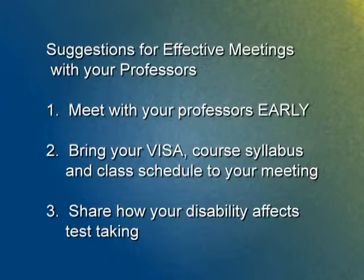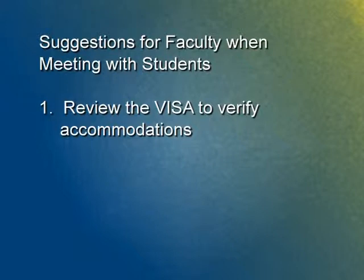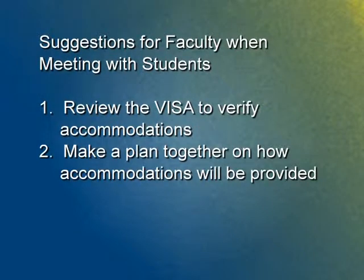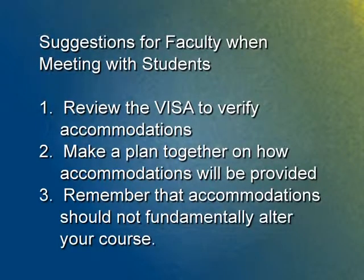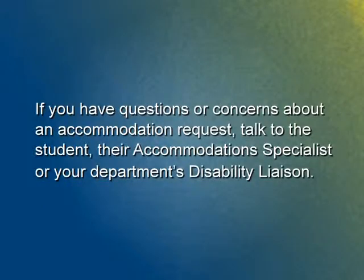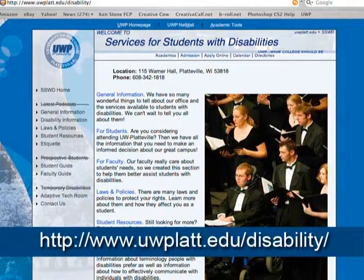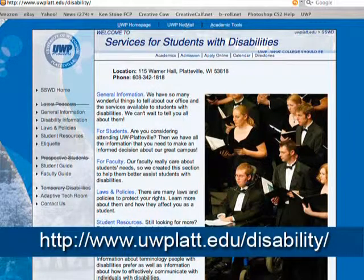If you need help or ideas on how to approach faculty, contact your accommodations specialist. The following suggestions may be helpful to faculty: Review the student's VISA to verify recommended accommodations. Reach an agreement on appropriate test accommodations for each exam. Provide reasonable accommodations that don't fundamentally alter the nature of the course. If you have questions or concerns, talk with the student, the accommodation specialist listed on the VISA, or your department's disability liaison found on the Services for Students with Disabilities website. A frequently asked questions document is also available on the website or at the office.